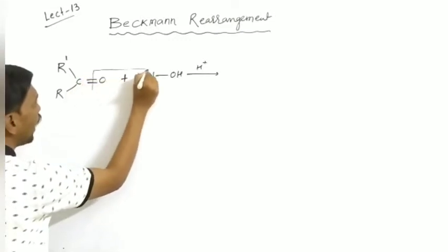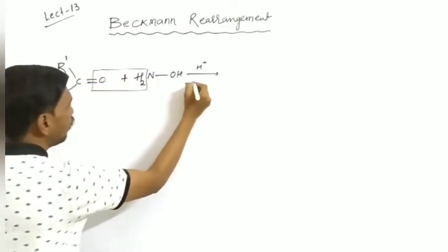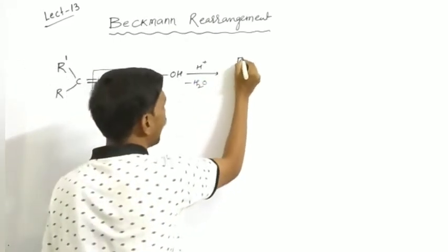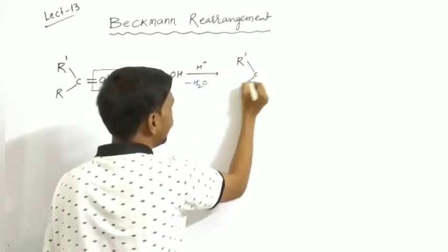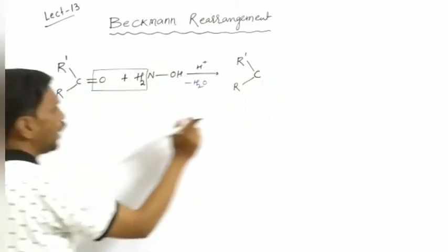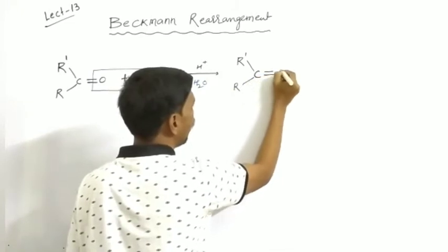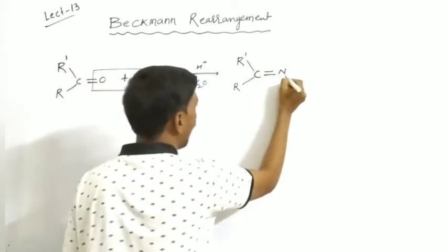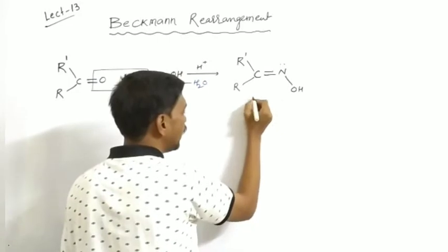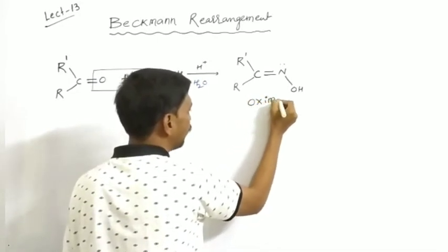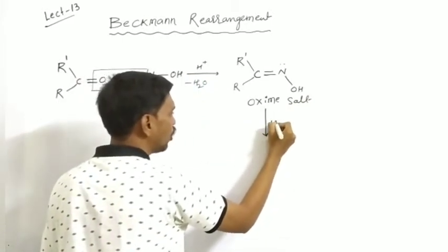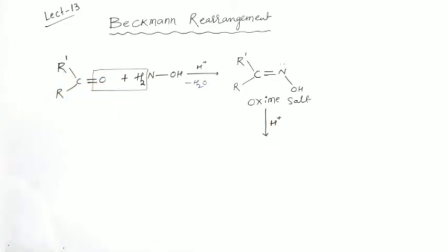A water molecule is eliminated. After elimination of water, we get R' bonded to C, with R, and a double bond to N and OH. This is called an oxime. The oxime salt then undergoes rearrangement in the presence of H+.